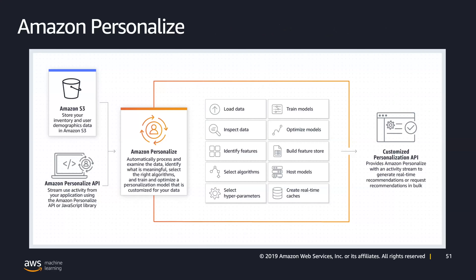Personalize is an interesting service that takes advantage of learnings from Amazon over the past 20 years on creating individualized recommendations for customers. With Personalize, you provide an activity stream from your application — clicks, page views, signups, purchases — and you can also provide items you want to recommend, such as inventory, articles, products, videos, or music. Then Personalize processes and examines the data, identifies what is meaningful, selects the right algorithms, and trains and optimizes a personalization model customized for your data, giving you a real-time recommendations API.